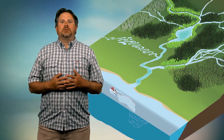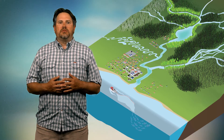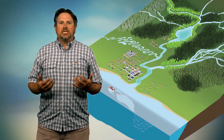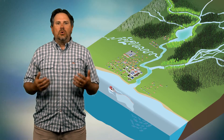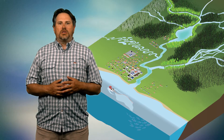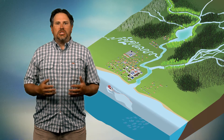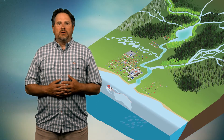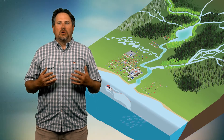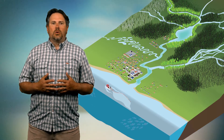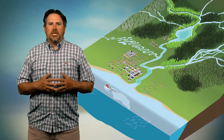humans consistently build towns and villages and cities in the lowland parts of watersheds. We build bridges across rivers and we urbanize the lower parts of watersheds.